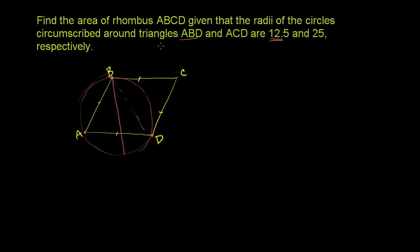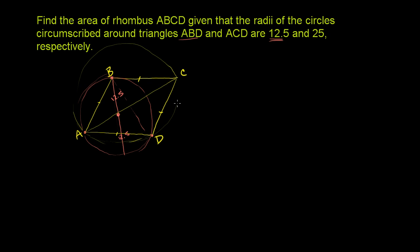So the 12.5 is the radius. The first circle around triangle ABD — this distance is 12.5, and this distance is also 12.5. Now let's focus on triangle ACD. Its circumcircle will look something like this — a circle that goes through those three points. It has a radius of 25, so if you draw a diameter of it, it is 25.